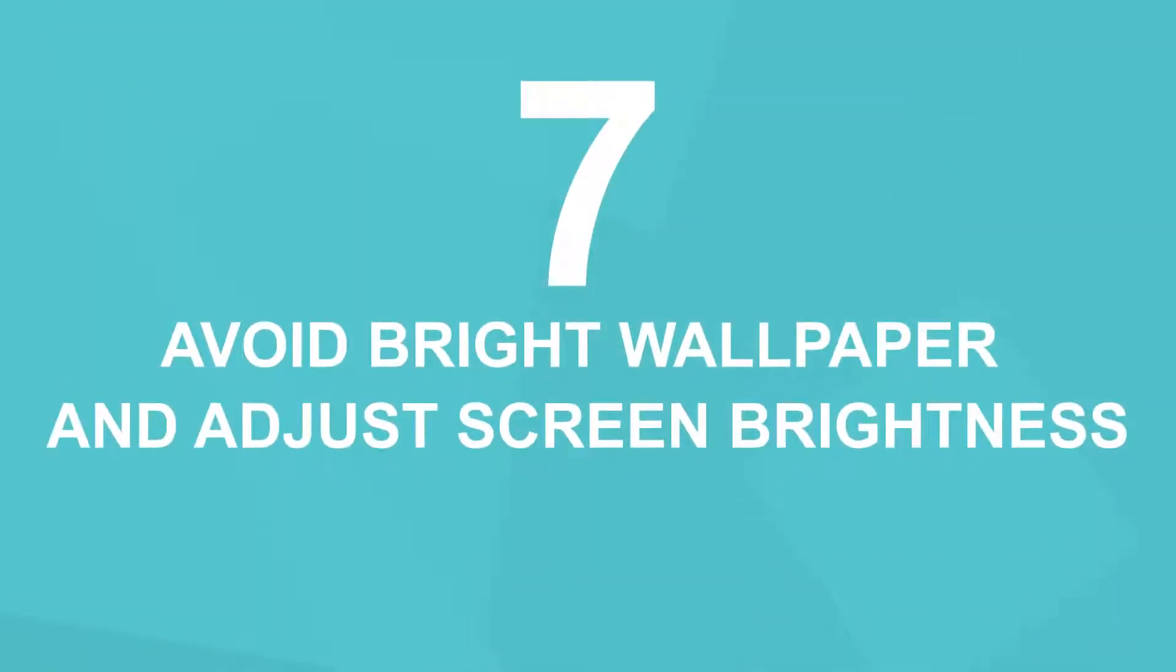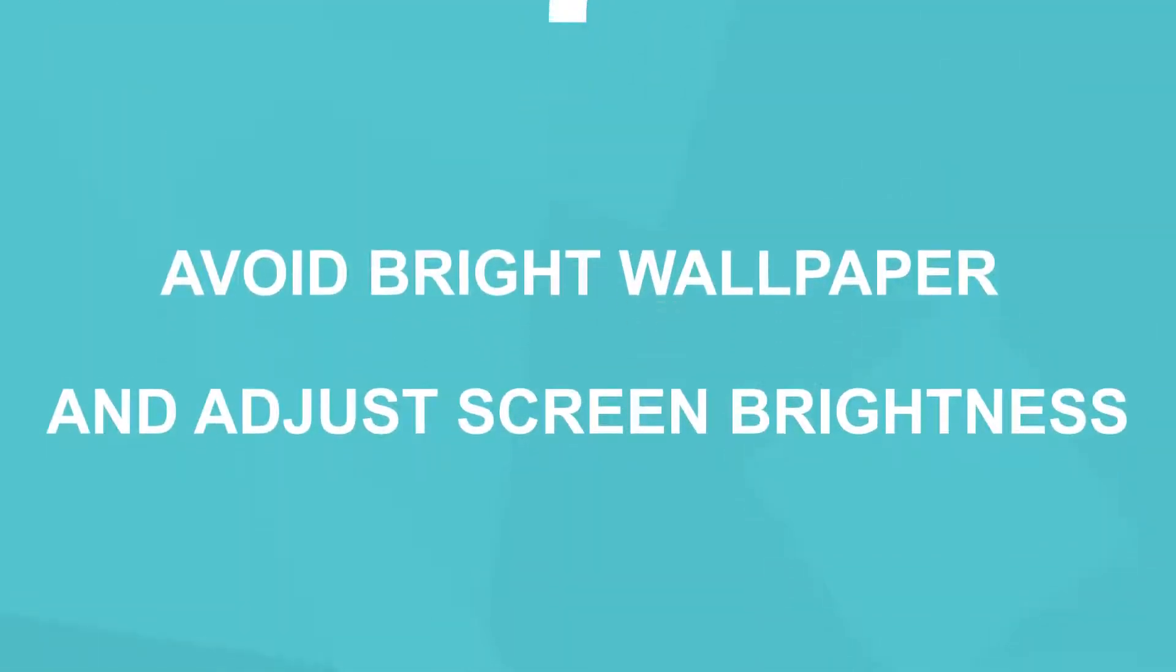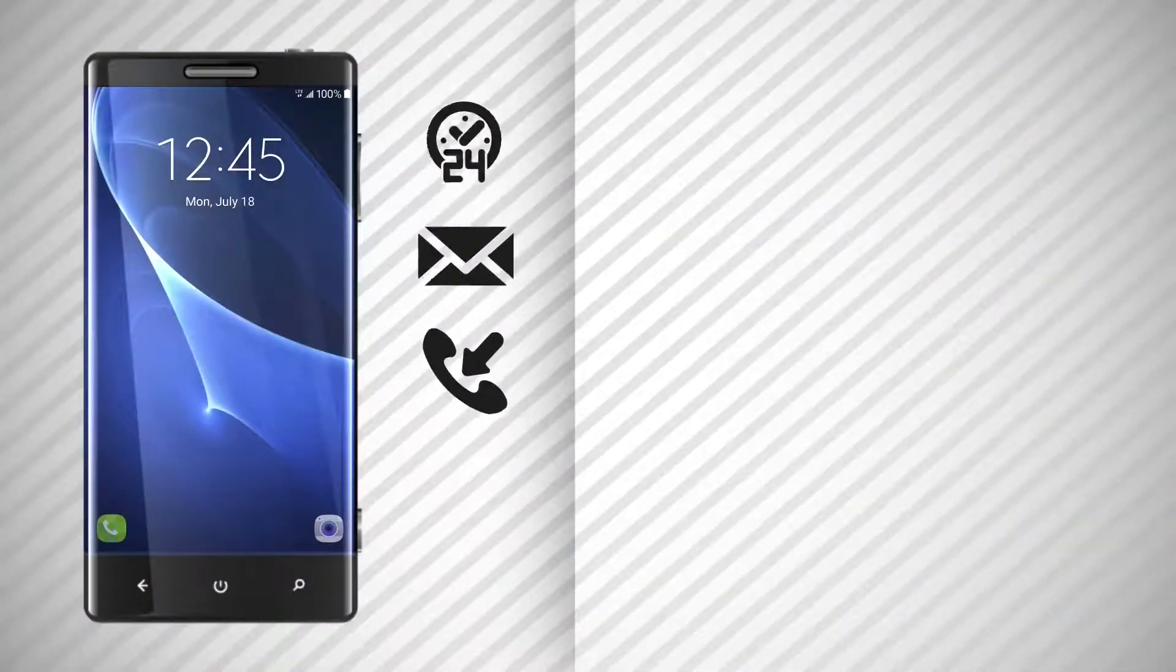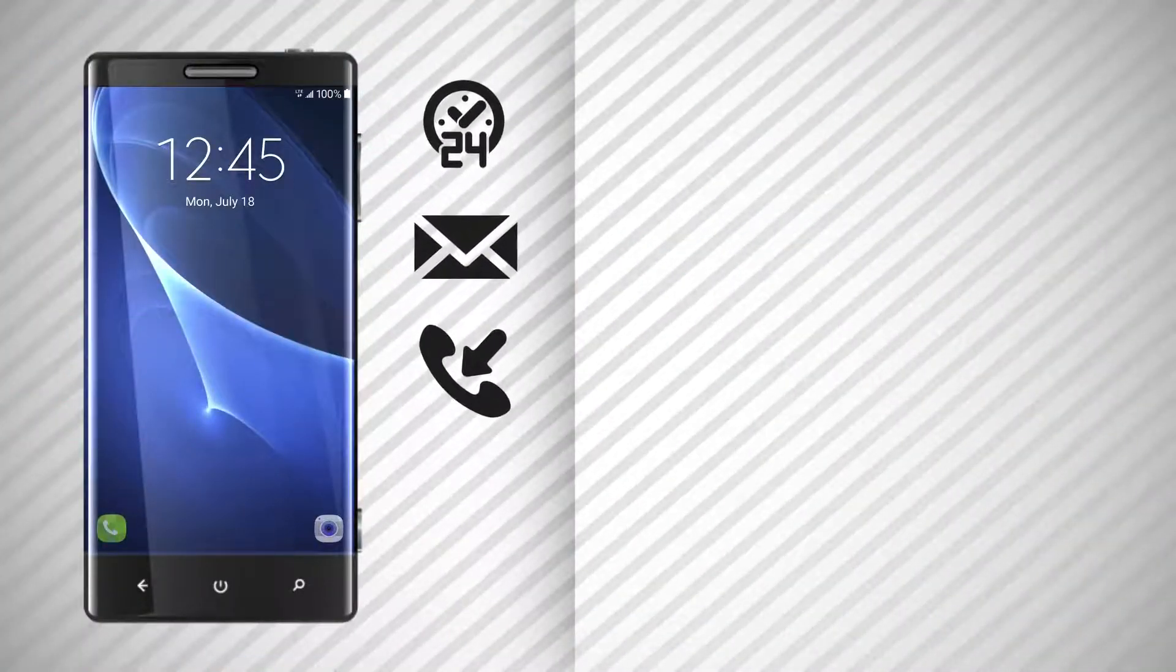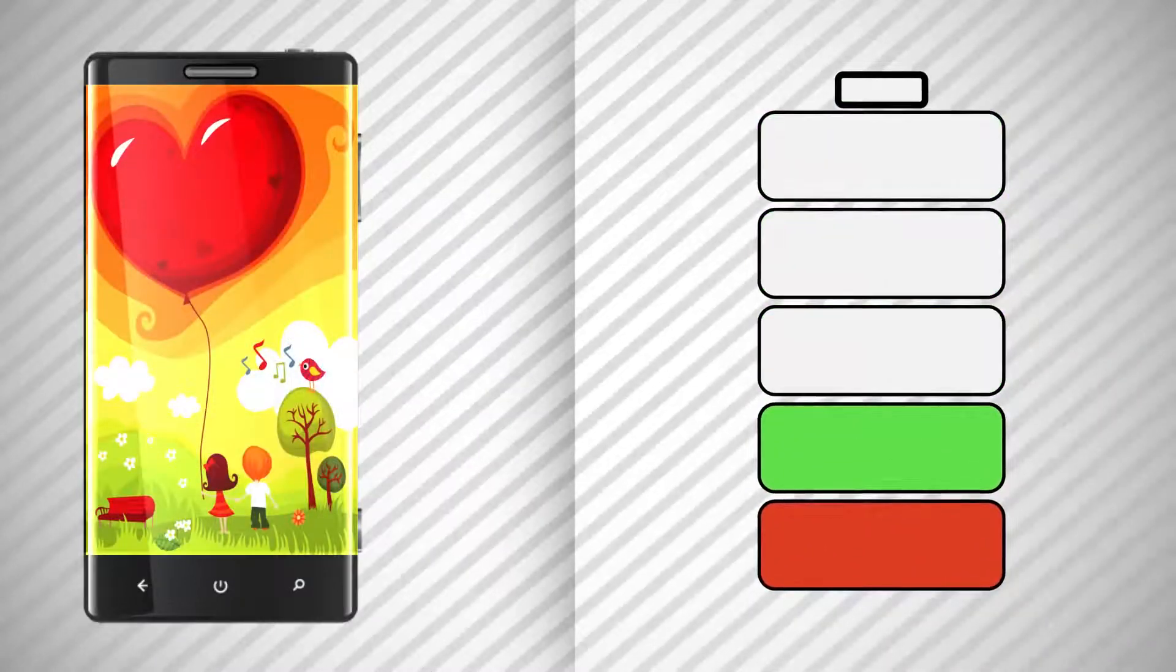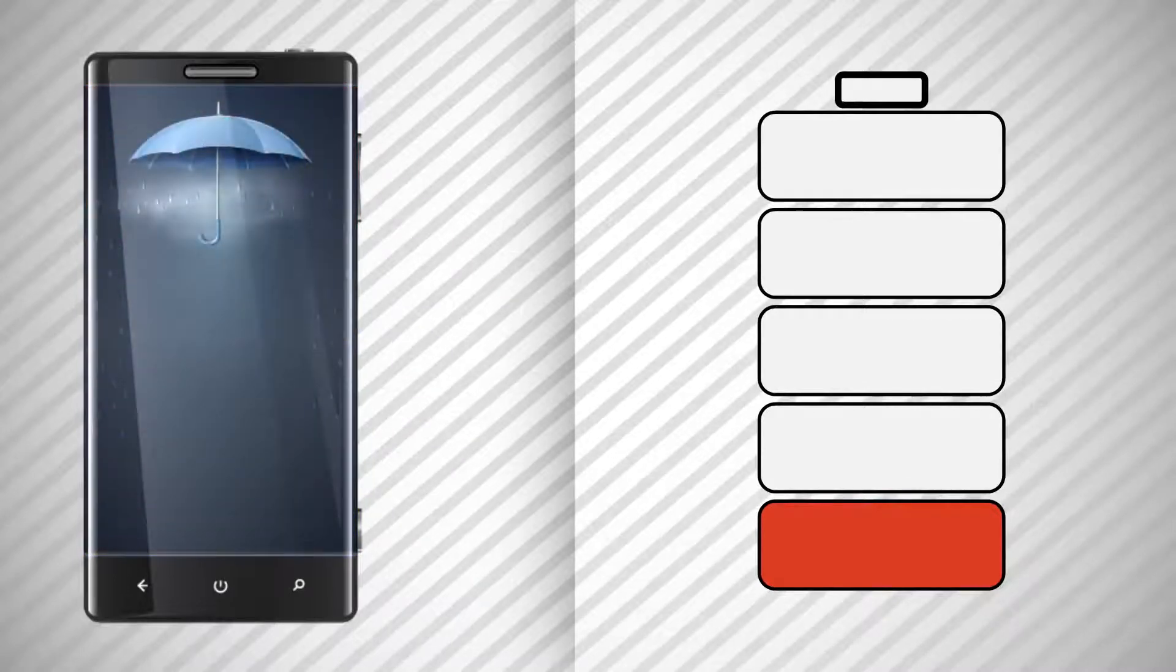Number 7. Avoid bright wallpaper and adjust screen brightness. When checking the time, text messages, or missed calls, you always look at the main display of your phone. A bright and colorful wallpaper on your phone's main screen can really eat up the battery. Hence, it's better to use black and white wallpaper. This will help conserve your smartphone battery.